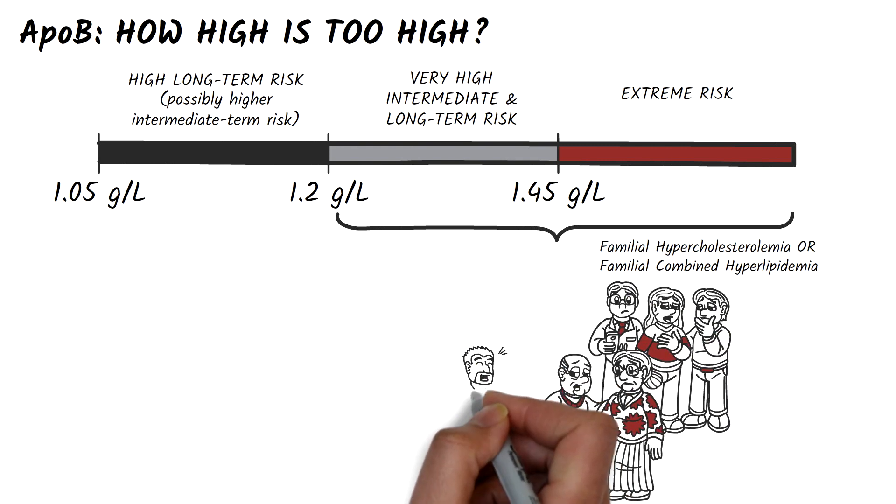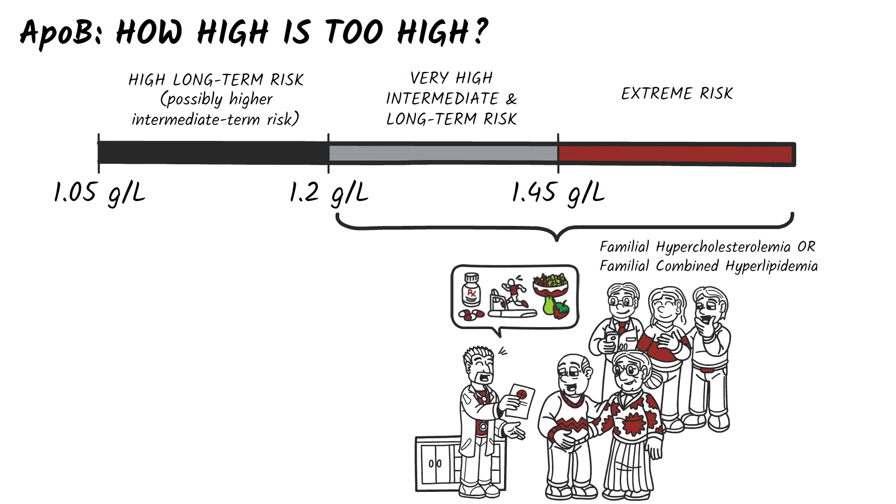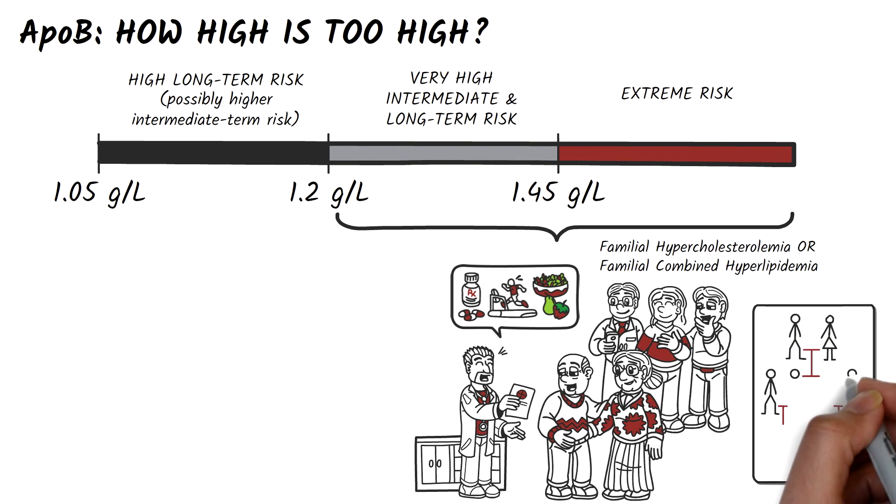What should you do? Recommend lifestyle and diet improvements. Treat the patient pharmacologically as long as there is no contraindication such as pregnancy, and do cascade screening of family members to see if they're affected as well.